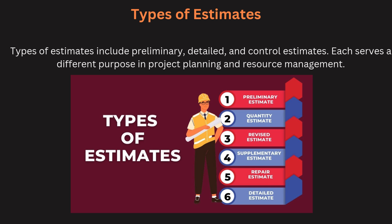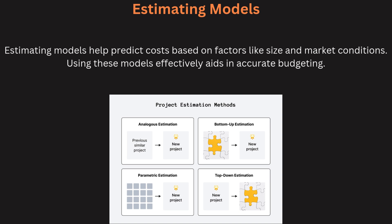Estimating models are techniques used to predict costs based on various factors. Common models include the per-unit model, the segmenting model, cost indexes, and the power-sizing model. The per-unit model calculates cost per unit produced, the segmenting model breaks cost down by project components, cost indexes adjust costs based on inflation or market changes, and the power-sizing model estimates costs based on project size. Using these methods effectively aids in accurate budgeting and forecasting.